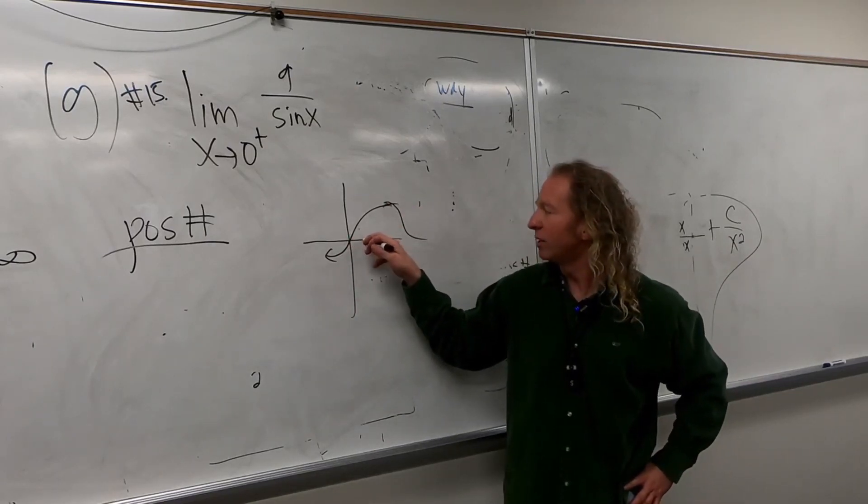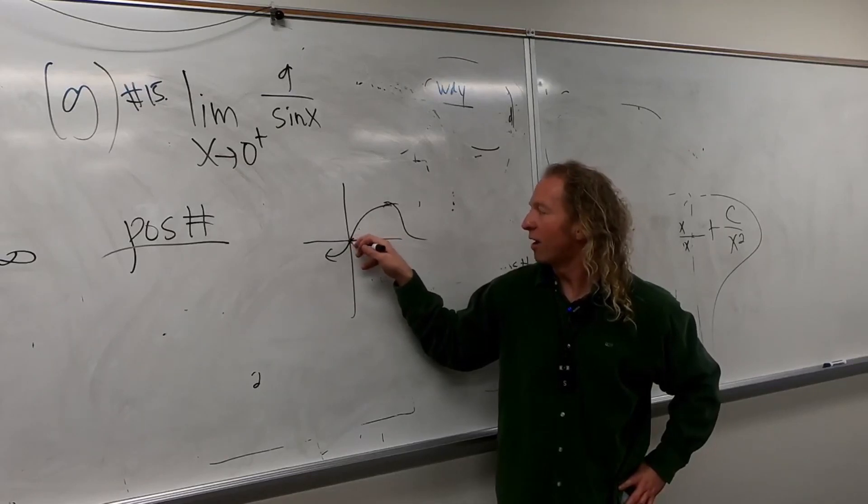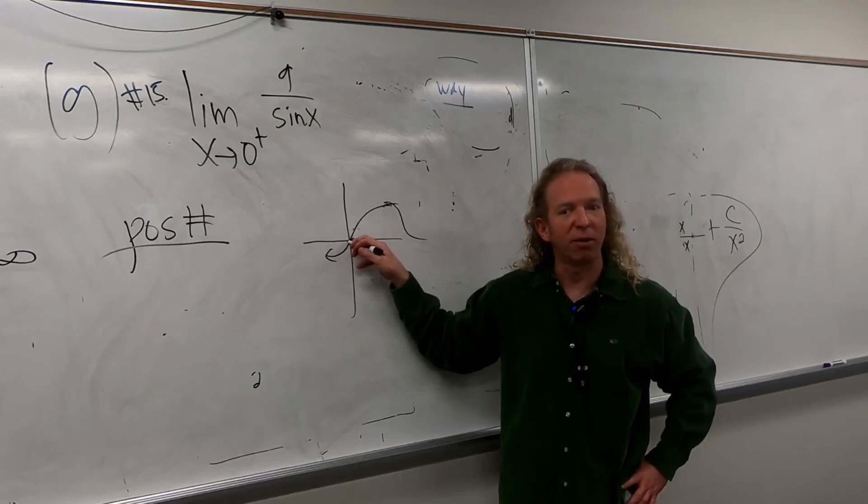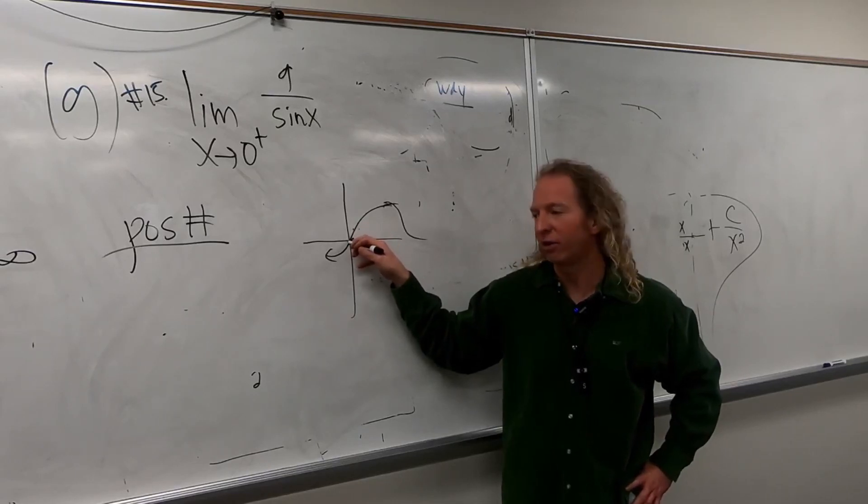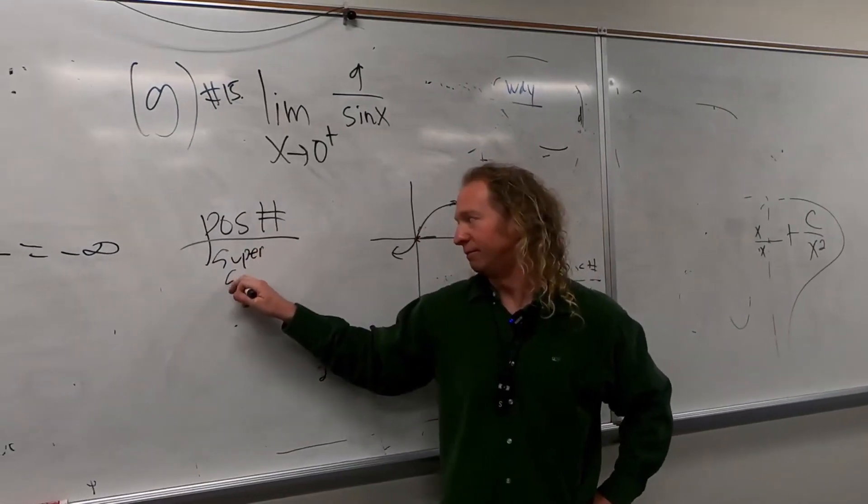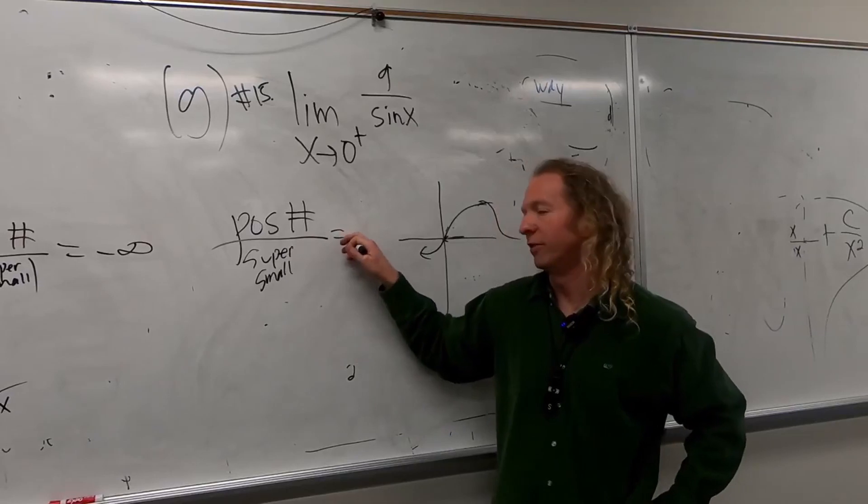So we're approaching from the right. So the Y values, when we approach from the right, will they be positive or will they be negative? Positive. Yeah, positive, right? Because they're up here. So it'll be super small and positive. So it's just infinity.